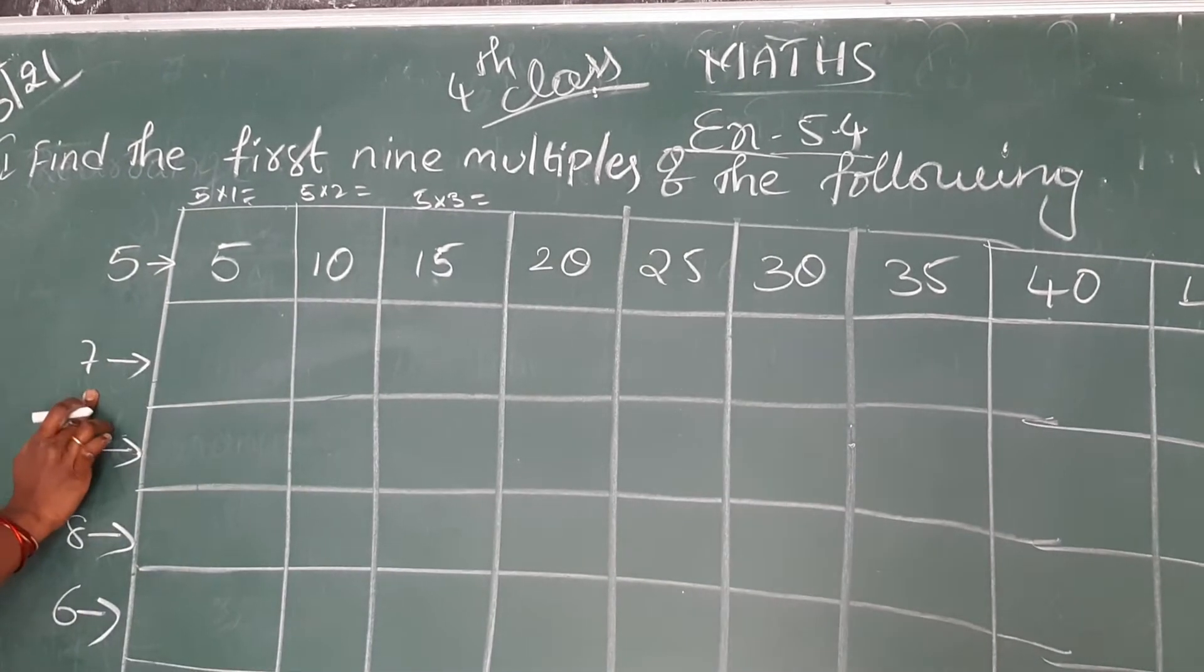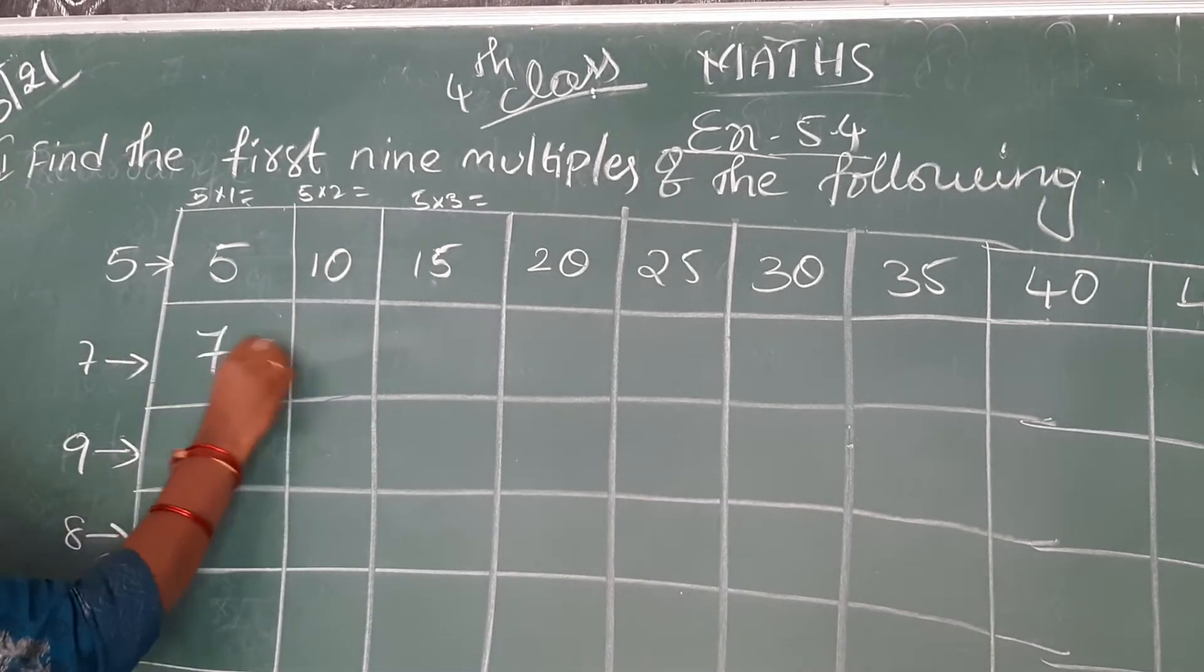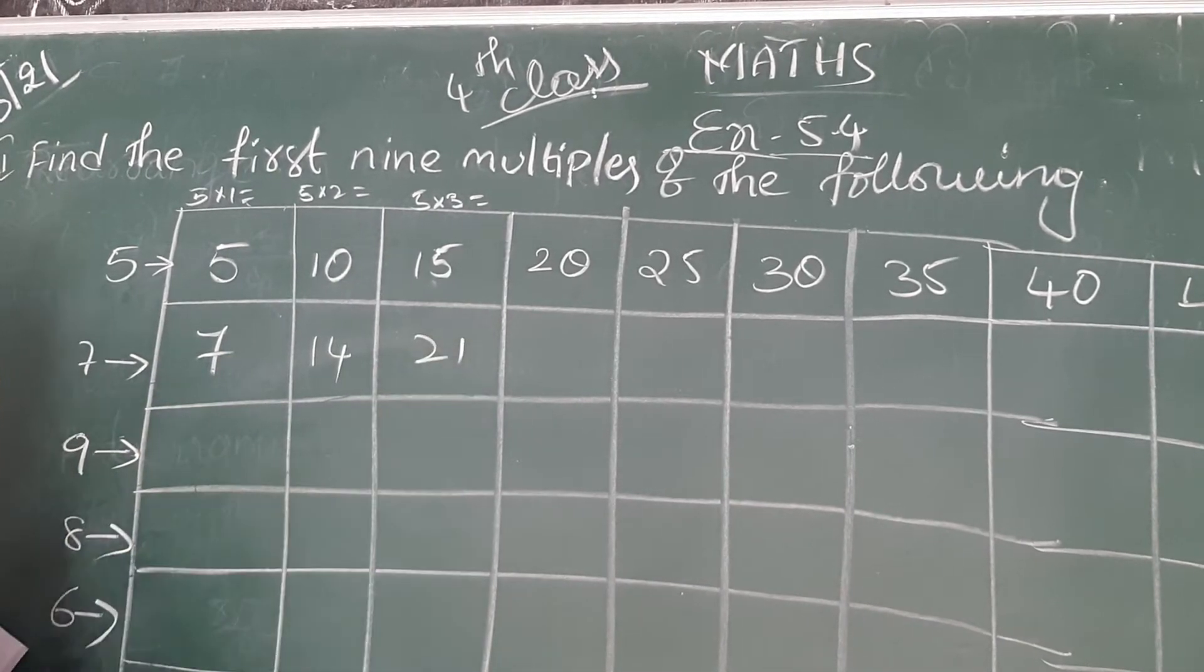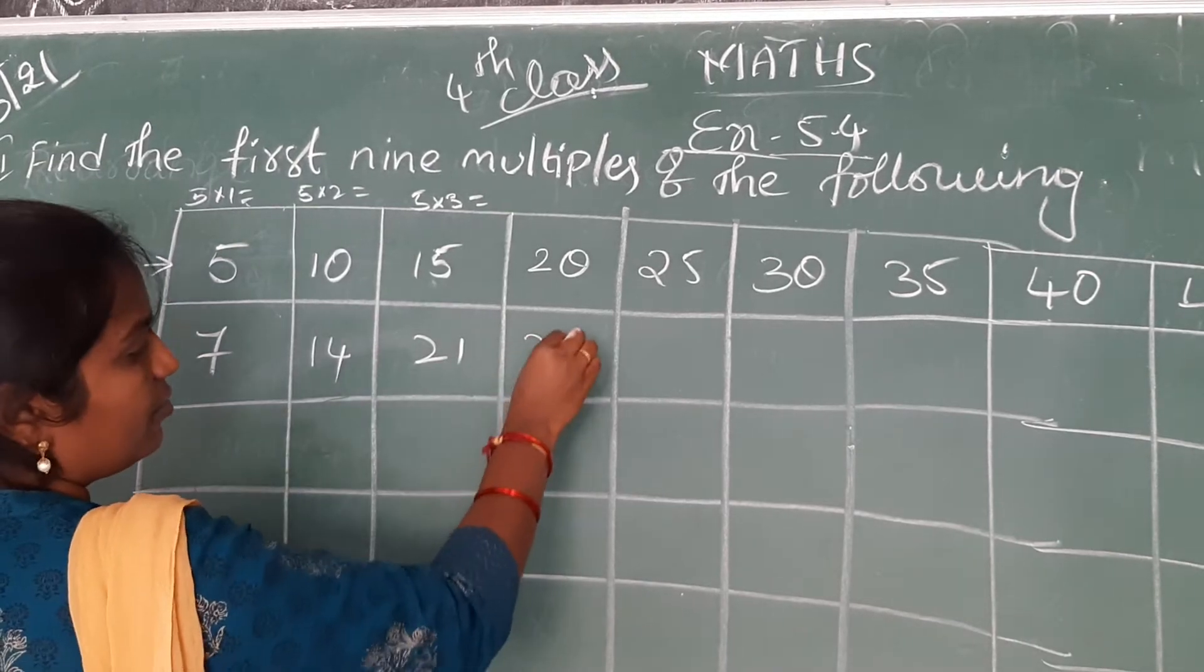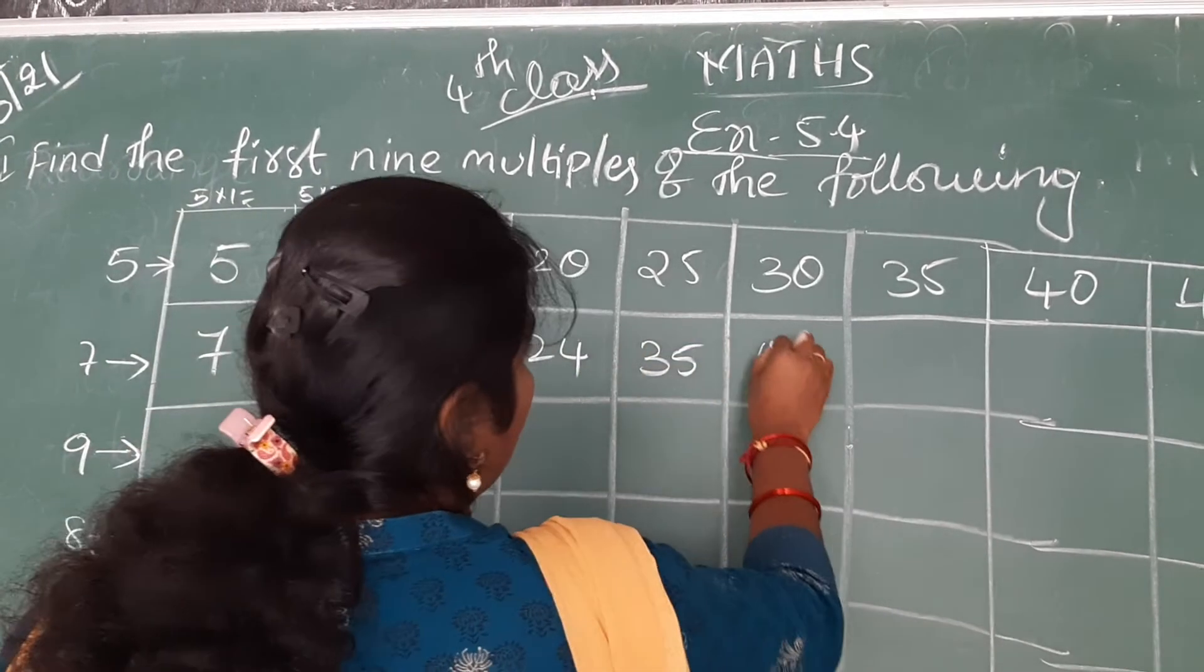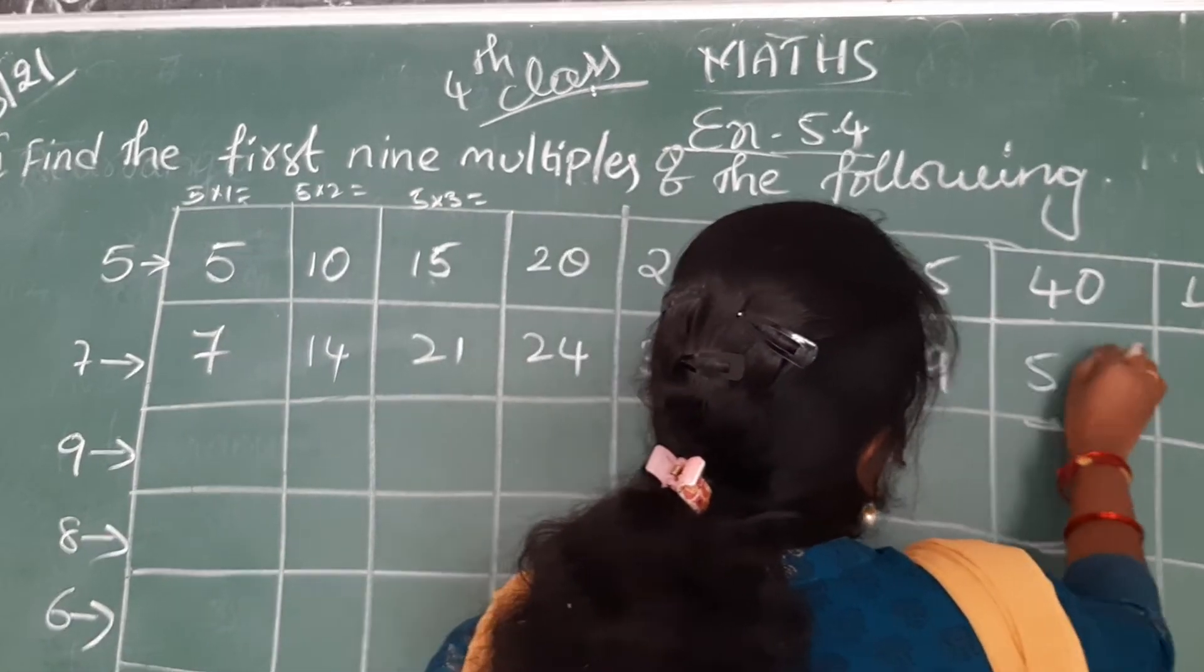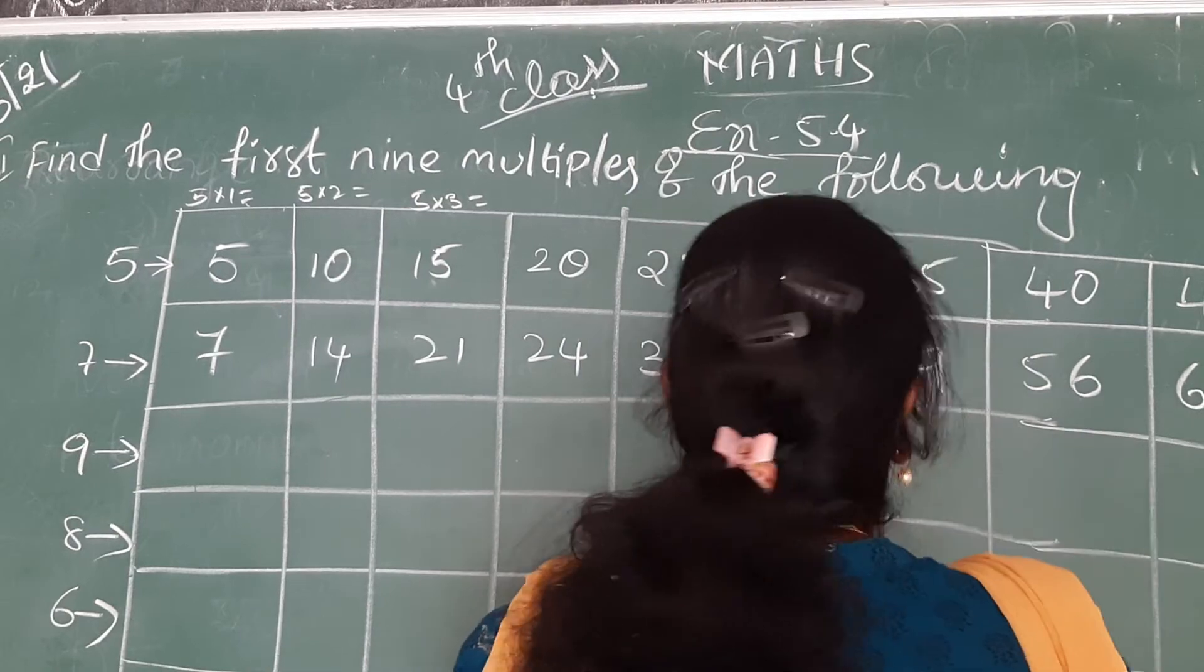Next 7 table. 7 ones are 7. 7 twos are 14. 7 threes are 21. 7 fours are 24. 7 fives are 35. 7 sixes are 42. 7 sevens are 49. 7 eights are 56. 7 nines are 63.